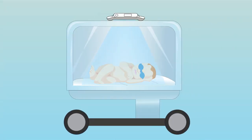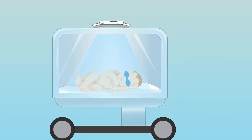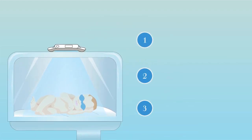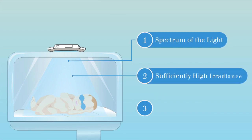But it's not enough to place blue light above jaundiced preemies. Consider these three important factors for effective phototherapy: spectrum of light, sufficiently high irradiance, and effective surface area. To better understand, let's doodle them out.